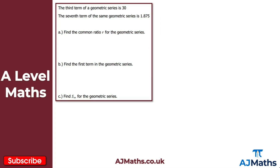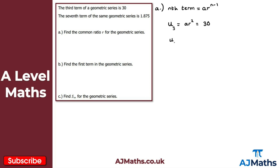Question 2: the third term of a geometric series is 30, and the seventh term is 1.875. For part A, we have to find the common ratio R. We use the formula for the nth term: AR to the n minus 1. So the third term U3 equals AR squared equals 30, and the seventh term U7 equals AR to the 6 equals 1.875.